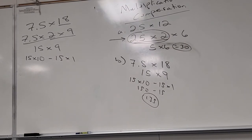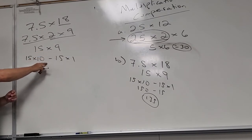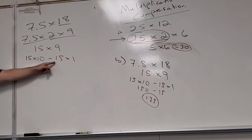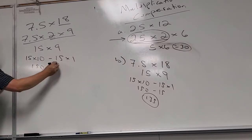Nine x's is ten x's minus one x. Nine fifteens is ten fifteens minus one fifteen: 150 minus 15 = 135. That kicks ass — and you didn't even know you were allowed to do that. Of course you are, because it's how things work.